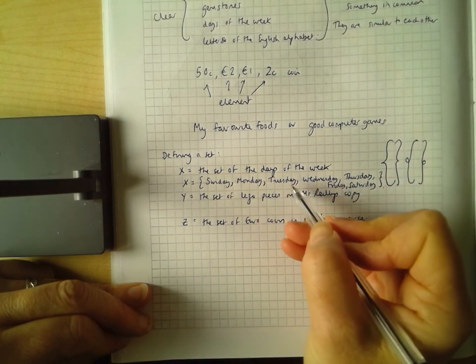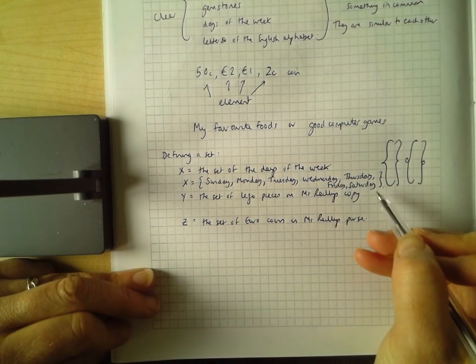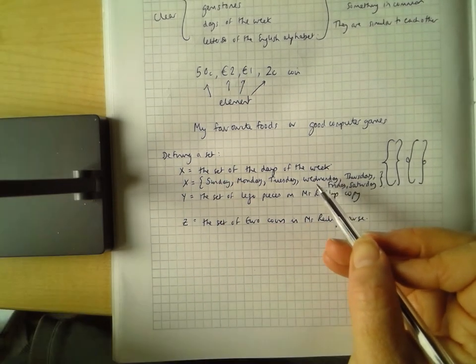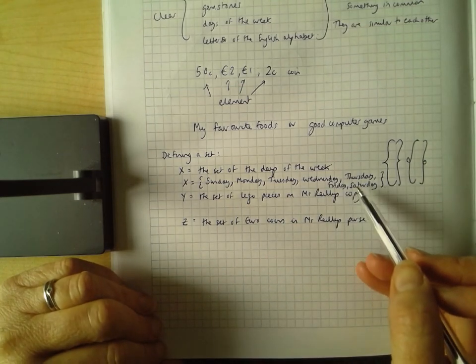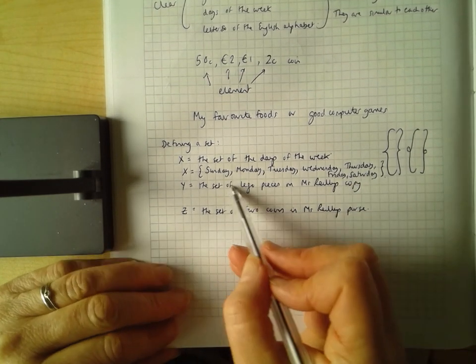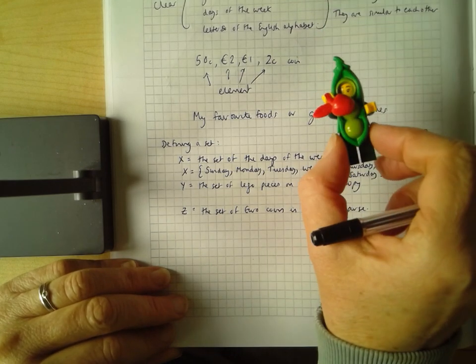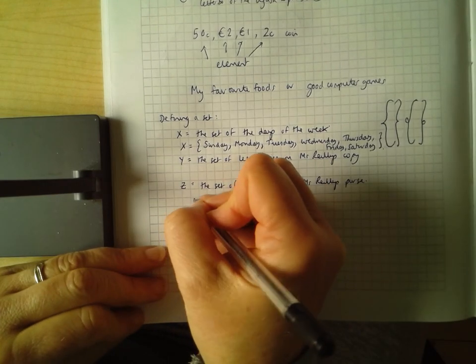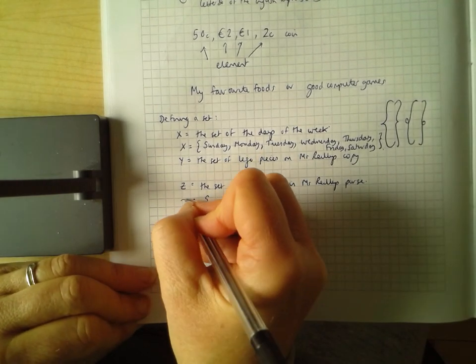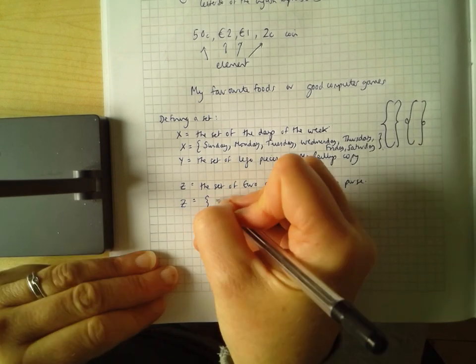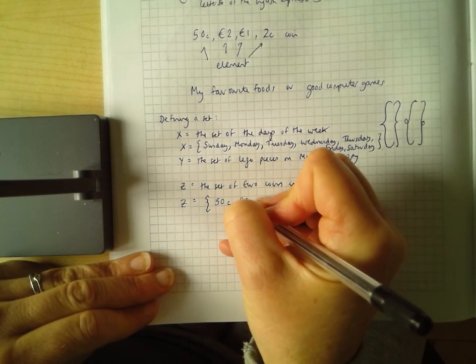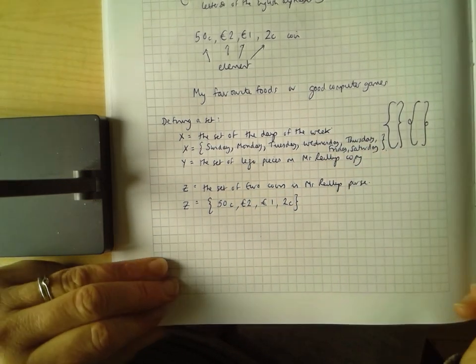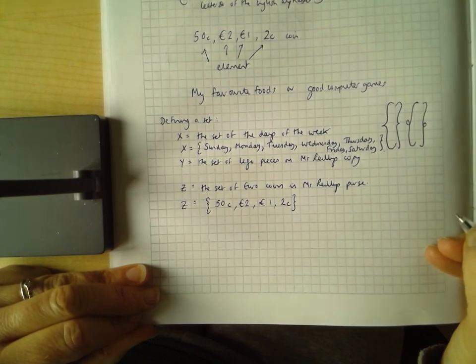Again, each of these items in a set is an element. The only elements that go in that set are the ones that are days of the week. If it's not a day of the week, it doesn't go in that set. I'm not going to do this one because this is a bit hard to describe. How do I describe the Peapod guy? The set of euro coins in Mr. Riley's purse is easier to define. So that might be curly brackets. So Z equals curly brackets, 50 cent, two euro, one euro, and two cent, and then a curly bracket to finish off.